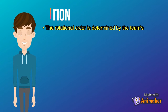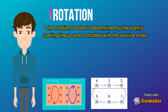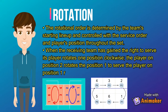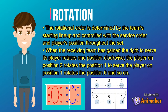Through rotation, the rotational order is determined by the team's starting lineup, controlling the service order and the players' positions prior to each set. When the receiving team has gained the right to serve, its players rotate. The player in position 2 rotates to position 1, and the player in position 1 rotates to position 6.